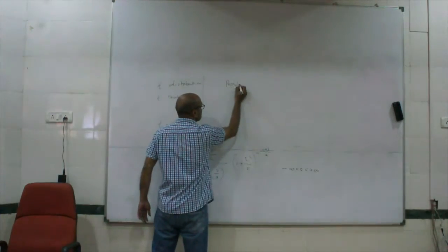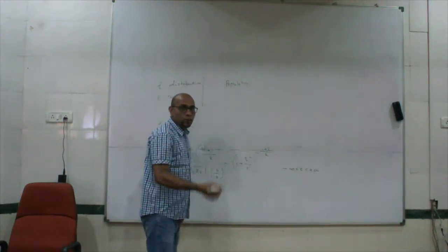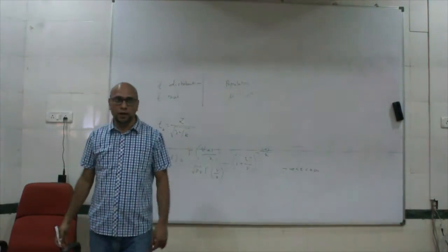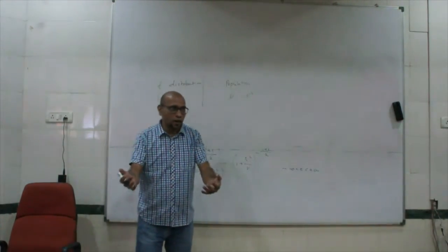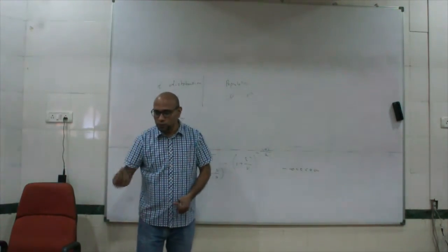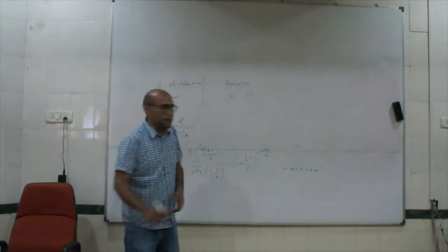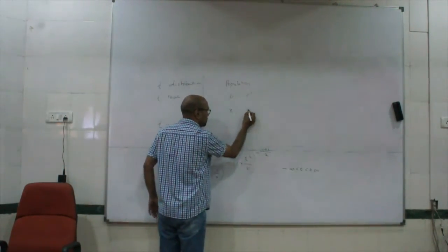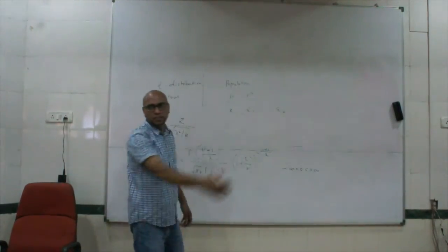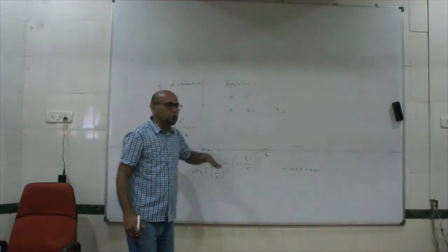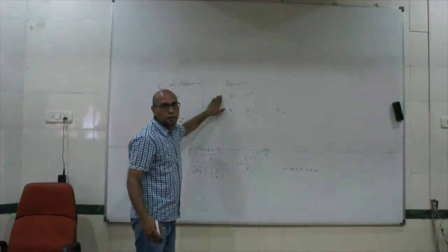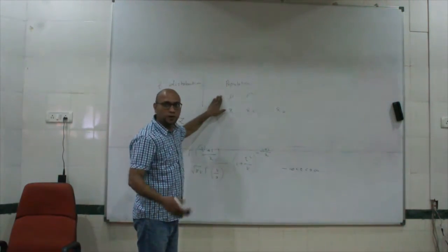Suppose there is a population which has mean mu and variance sigma-squared — and obviously standard deviation sigma. Suppose you draw lots of samples from this population, and for each sample you compute the mean. So you will have x-bar 1, x-bar 2, and so on up to x-bar k — a large number of such x-bars. We also know that the mean of these means would be mu, because the sample mean is an unbiased estimator of the population mean mu.